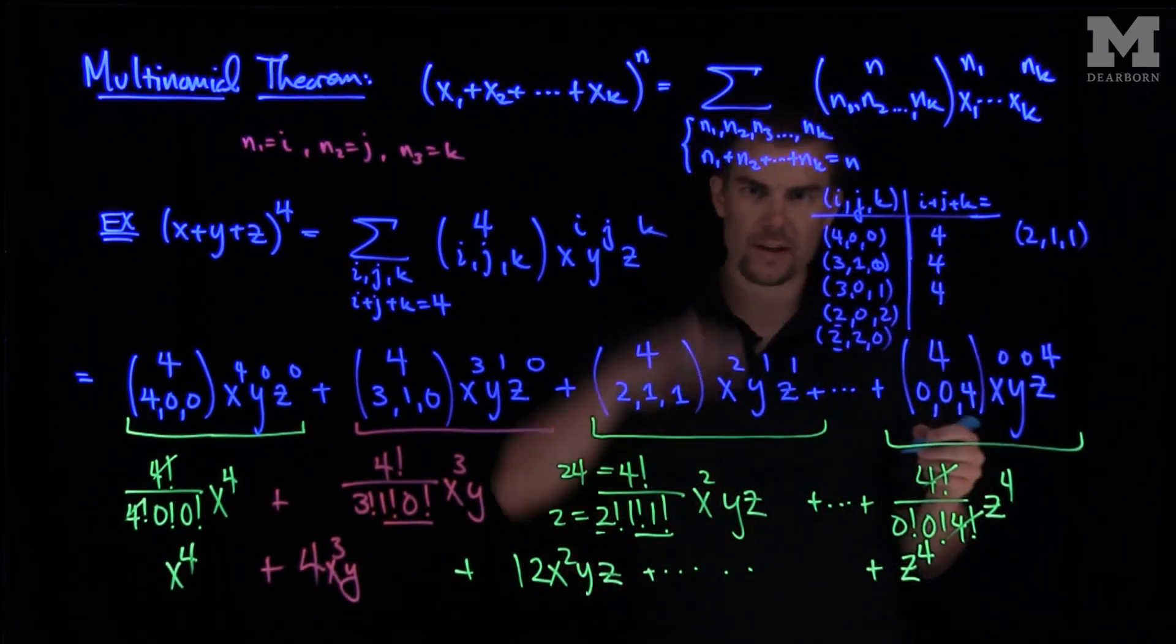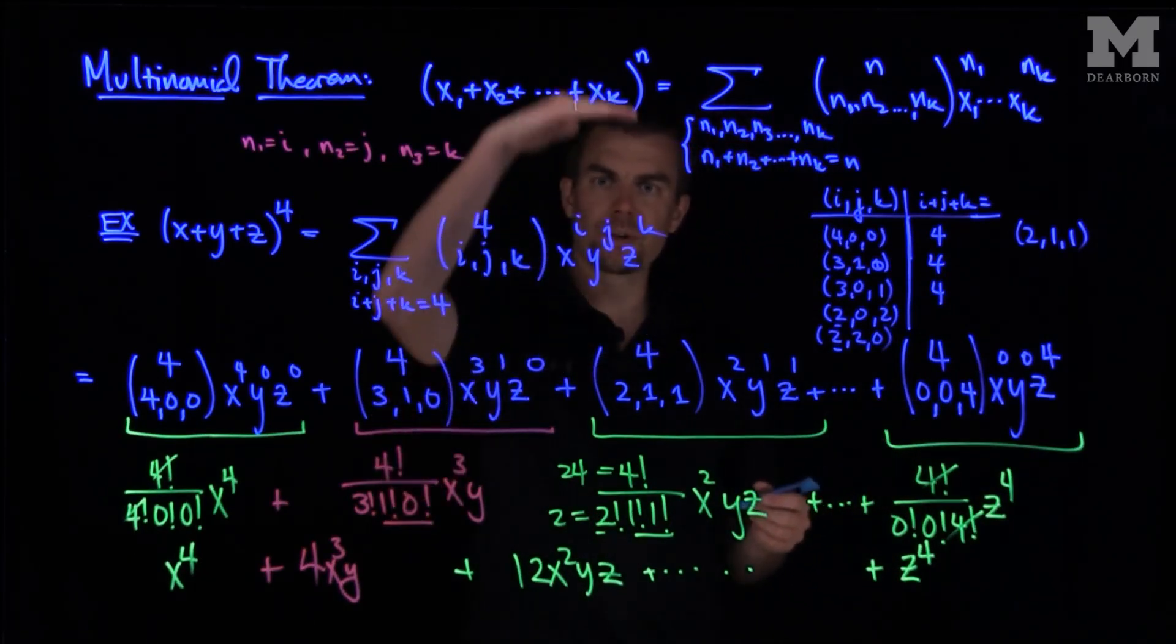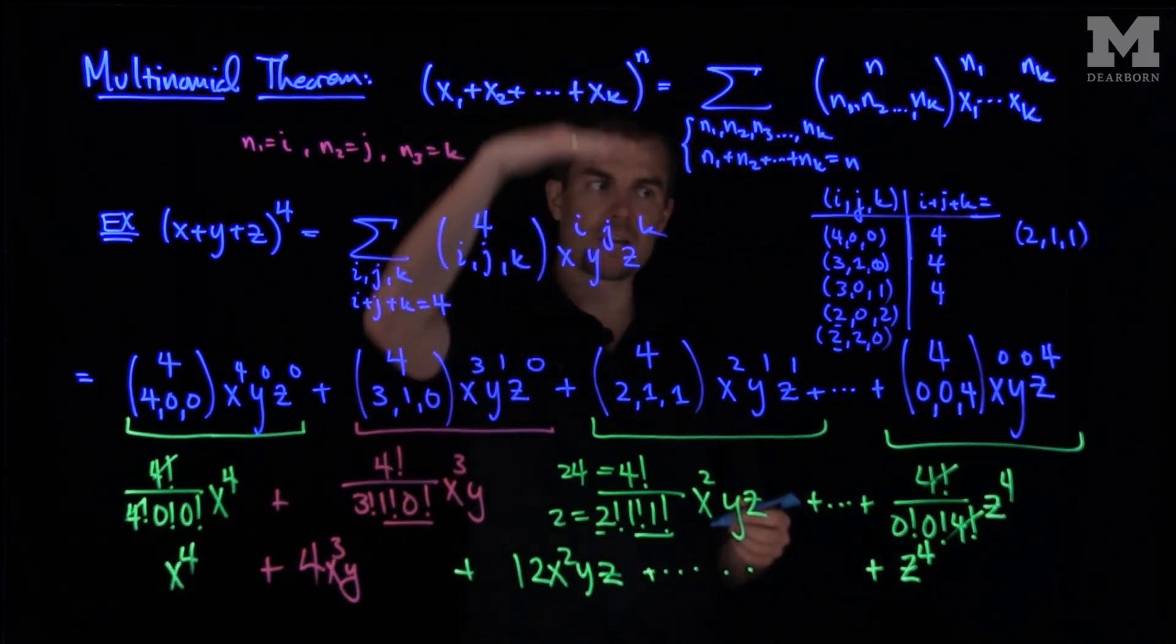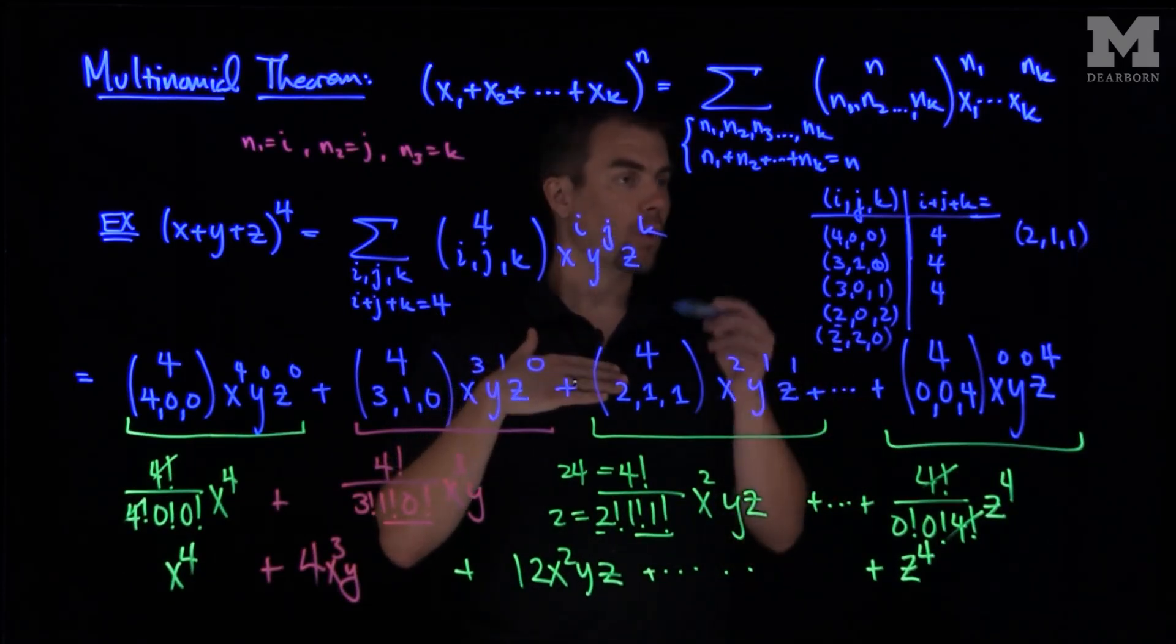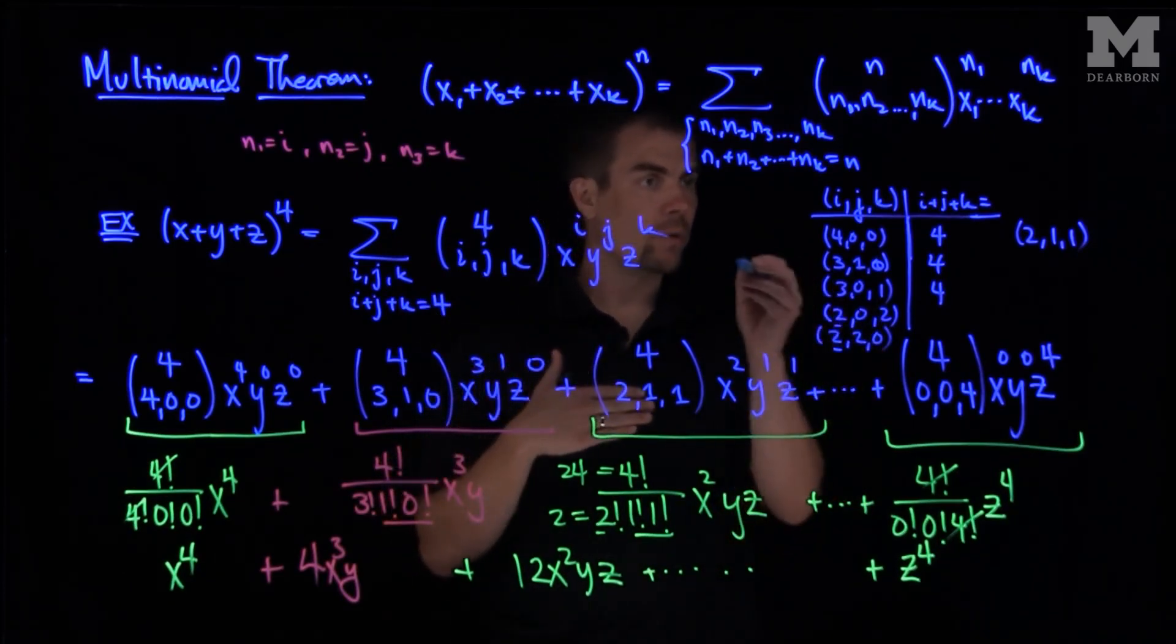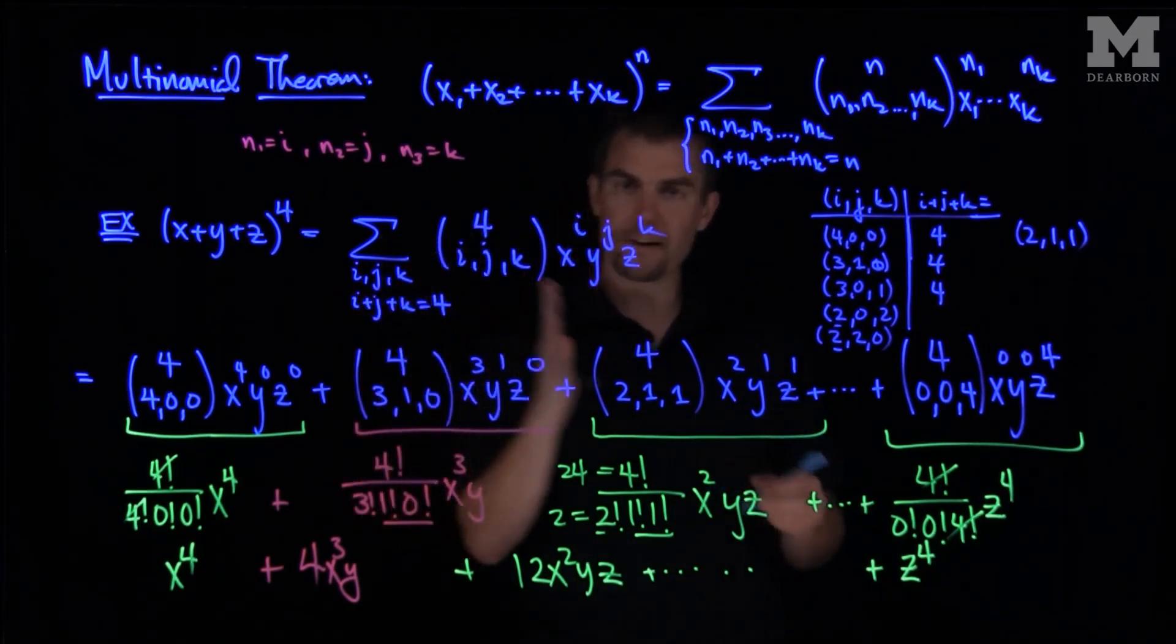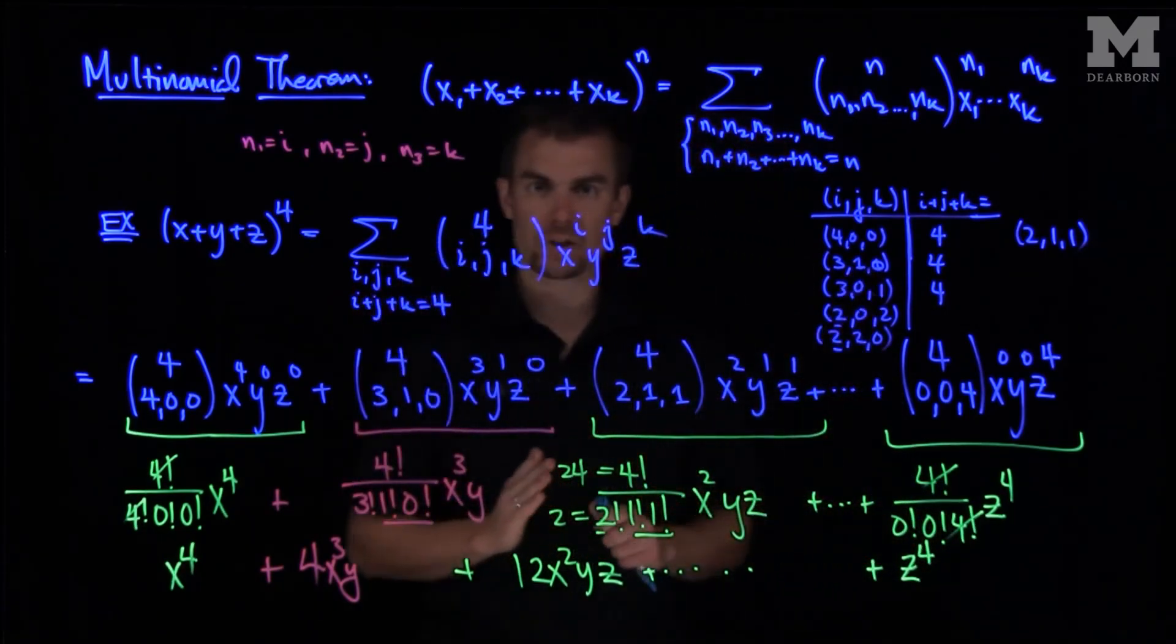And then you can cycle through this and then systematically list all the possibilities based on the parameter i. Everything that i can be equal to. And by doing this, you'll see that the different possibilities that arise will cover all the desired cases. So writing down a chart like this will help you identify each term in the multinomial expansion.